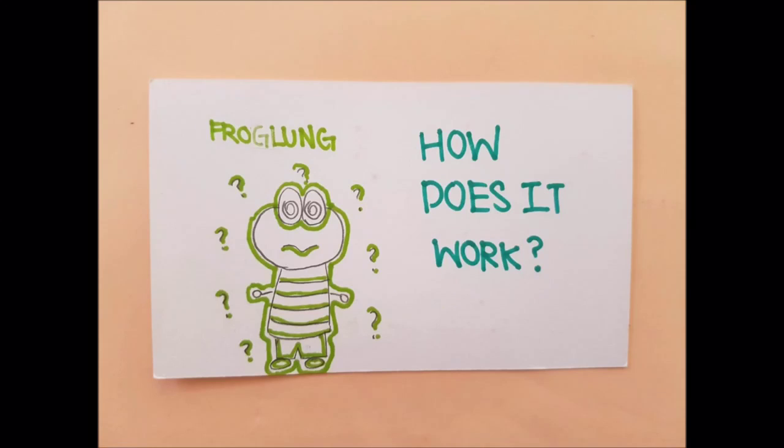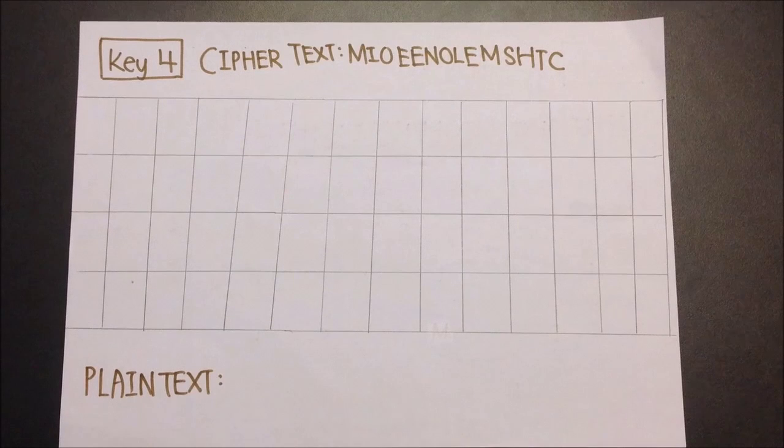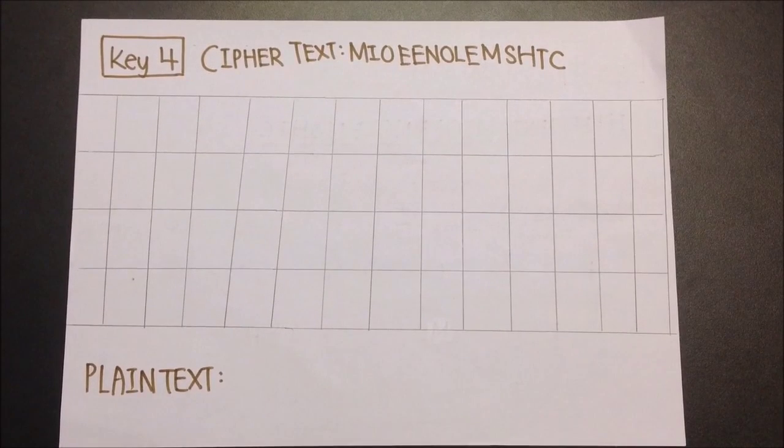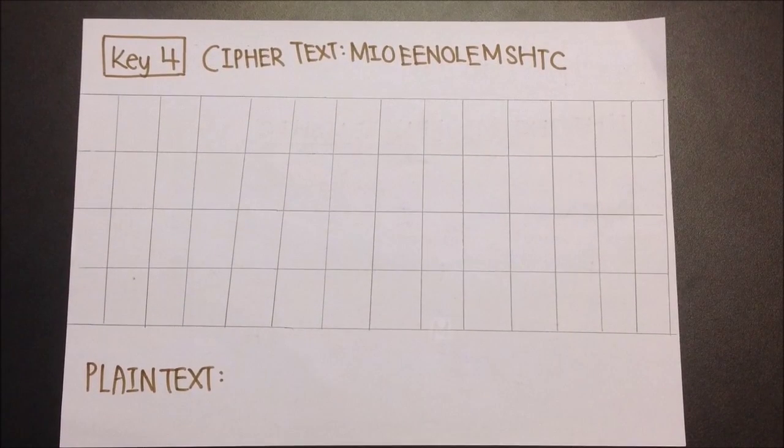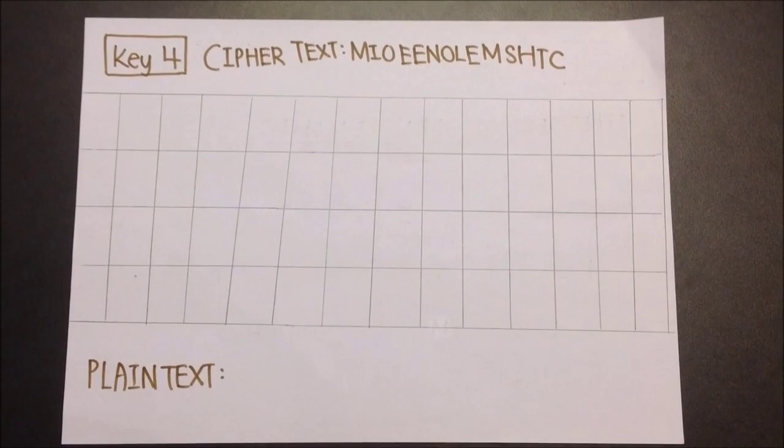So how does the railfence cipher work? Don't worry, I'll explain it in a minute. Firstly, start by making a grid. The number of rows in the grid will be equivalent to the key, while the number of columns will be equivalent to the number of letters in the text.